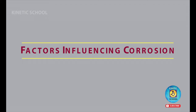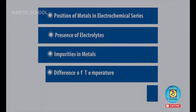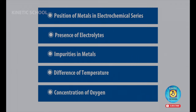Factors influencing corrosion: position of metals in electrochemical series, presence of electrolytes, impurities in metals, difference of temperature, concentration of oxygen, etc.